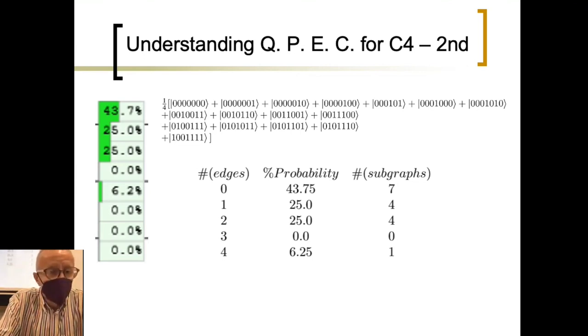6.25 stands for the number of subgraphs having four edges, which is just one. Which one? The total one. 25.25 stands for the number of subgraphs with one and two edges. These four subgraphs. And this seven stands for the number of subgraphs having zero edges. This is the cardinality of the independent set.